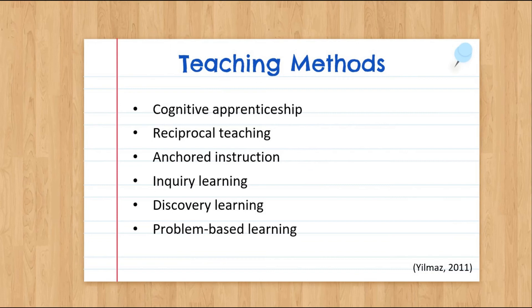Reciprocal teaching, based on information processing theory, is a dialogue between the educator and students about parts of a reading, asking students to use four strategies: summarizing, question generating, clarifying, and predicting. Anchored instruction involves teaching designed around anchors that involve a case study or problem situation, anchoring learning in a realistic context. Inquiry learning aims to help learners develop higher-order thinking skills by investigating an issue and formulating or testing hypotheses. Discovery learning encourages students to discover principles by asking questions, formulating hypotheses, doing experiments, and investigating phenomena.